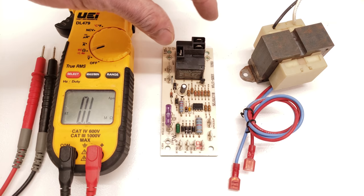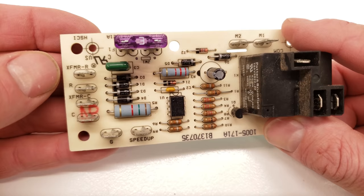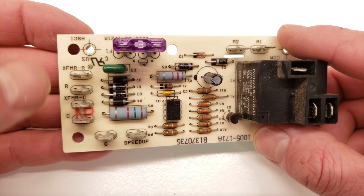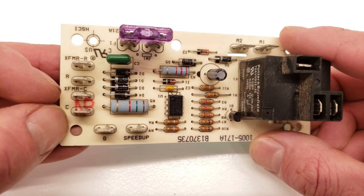I'll take you to an up-close image of this. I want to first explain what this XFMR-R is - that's your power input to the board. It may be labeled X-R or even T depending on the control board.